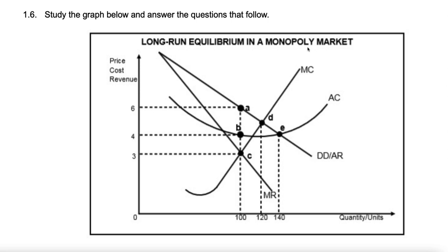This is our demand curve, which is equal to AR as always, and they are not equal to MR because each additional unit is sold at a lower price. Here is our average cost curve, which cuts the MC at its lowest point. Based on our profit maximizing rule, this firm is going to produce 100 units, because MC intersects MR at point C. Points A, B, D, and E are just there to confuse you.